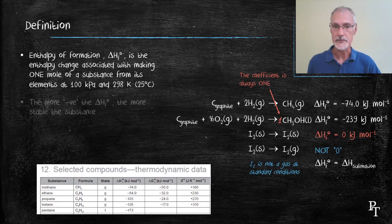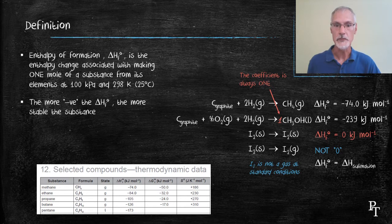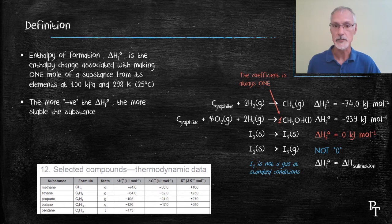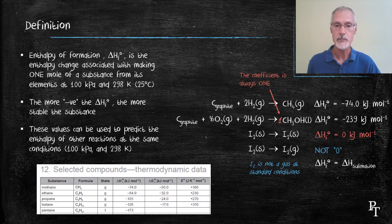The more negative the value is, the more stable it is. We've seen this before when we started this unit off. The further down the energy well it moves, it becomes more stable, so I would expect methanol to be a more stable substance than methane. And finally, this heats of formation data can be used to predict the heats of other reactions by applying Hess's law.